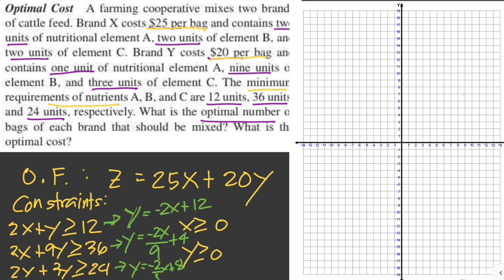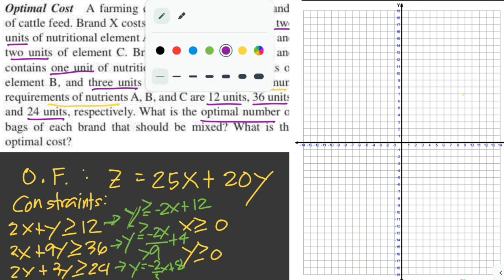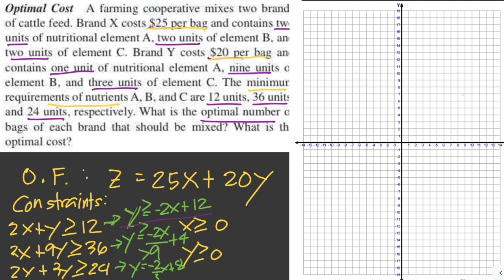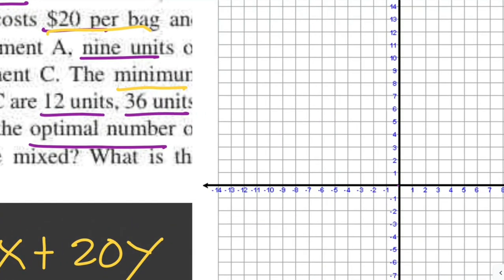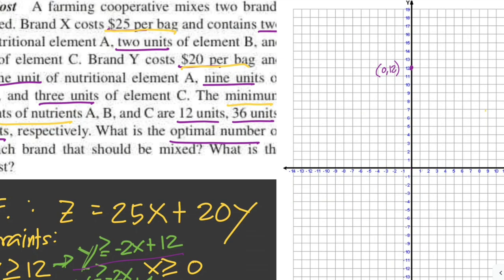Now we can plot the straight lines first, and since it says greater than or equal to, that means the values above the line including the line. Let's graph the first inequality: y greater than or equal to negative 2x plus 12. When x is 0, y is 12, so this point is (0, 12). When x is 1, y is 10, so this is (1, 10). And when x is 6, y is 0, so this is (6, 0). Then we draw a line here.